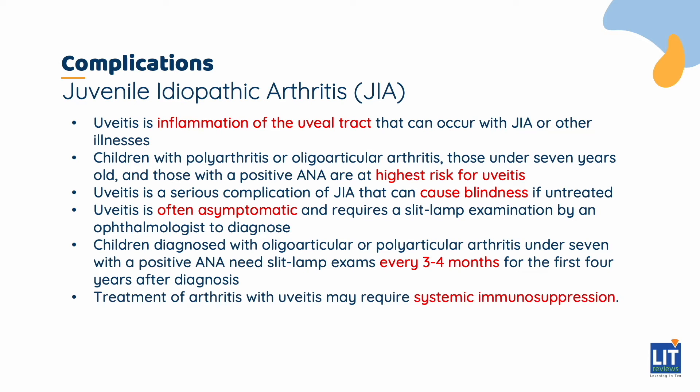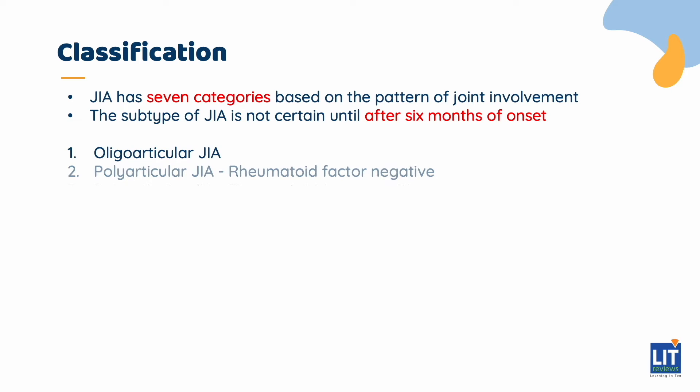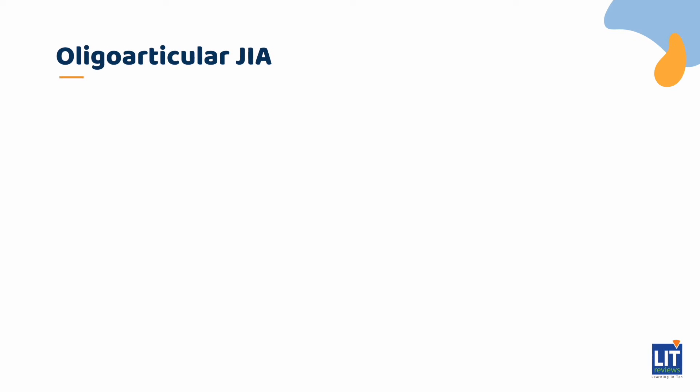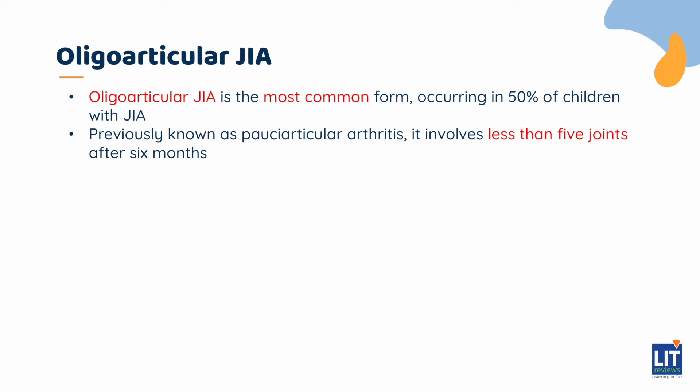Treatment of arthritis when uveitis is present often requires systemic immunosuppression. There are 7 subtypes of JIA classified based on the pattern of joint involvement. Since the disease may take time to evolve, the JIA subtype is not certain until after 6 months of onset. The first type is oligoarticular JIA, which is the most common form of JIA, occurring in 50% of children with JIA.